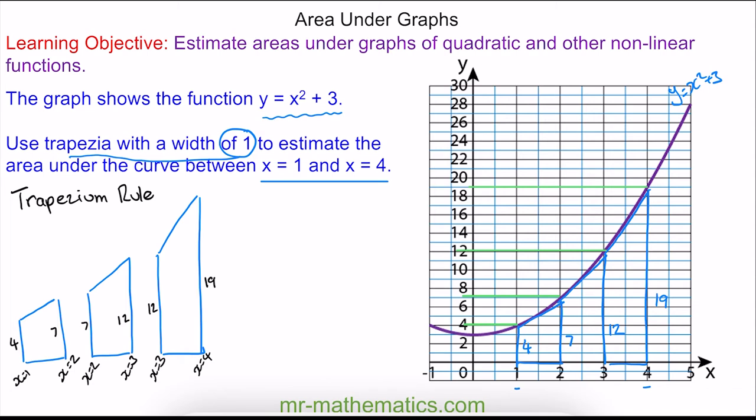And to work out the area of the trapezium, I'm going to double them to make it into a rectangle, where this length will be the same as the 7 here. So the area of the rectangle would be 11 times 1, which is 11. So the trapezium is half of that, and that will be 5.5 unit squared.